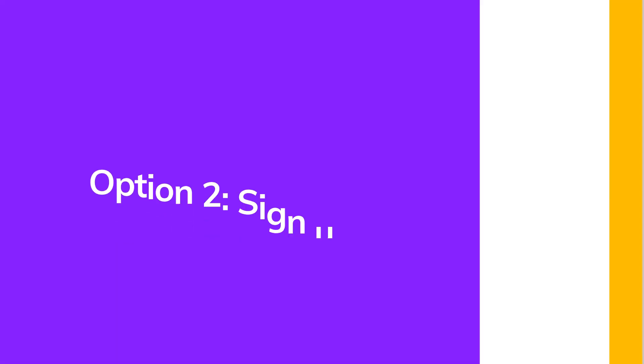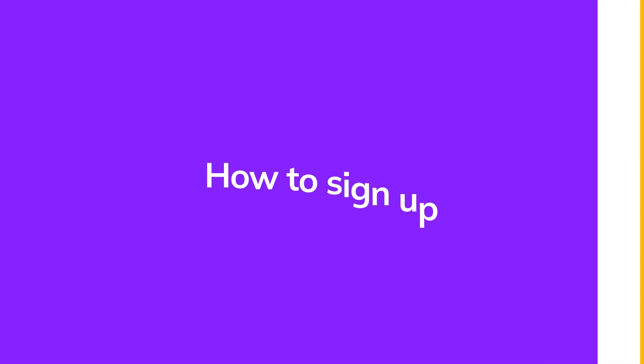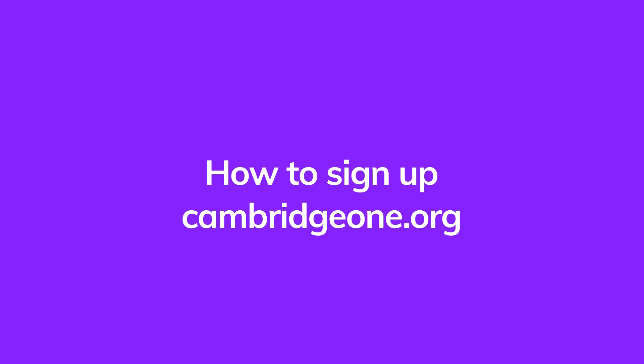Students sign up and activate Study and Succeed. If your school can't sign up for you, you'll need to sign up and use the activation code to start using Study and Succeed. If this is your first time on Cambridge One, you'll need to sign up.